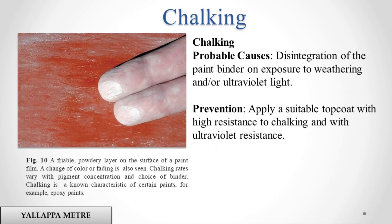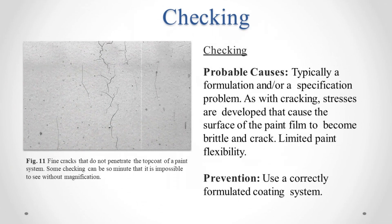Chalking. Probable causes: disintegration of the paint binder on exposure to weathering and/or ultraviolet light. Prevention: apply a suitable top coat with high resistance to chalking and with ultraviolet resistance. Checking. Probable causes: typically a formulation and/or specification problem. As with cracking, stresses are developed that cause the surface of the paint film to become brittle and crack. Limited paint flexibility. Prevention: use a correctly formulated coating system.